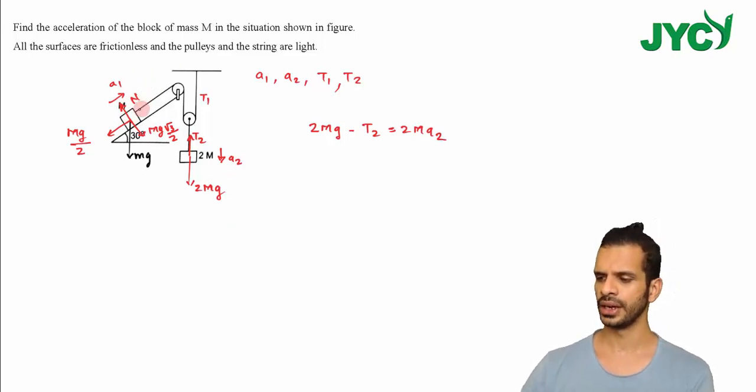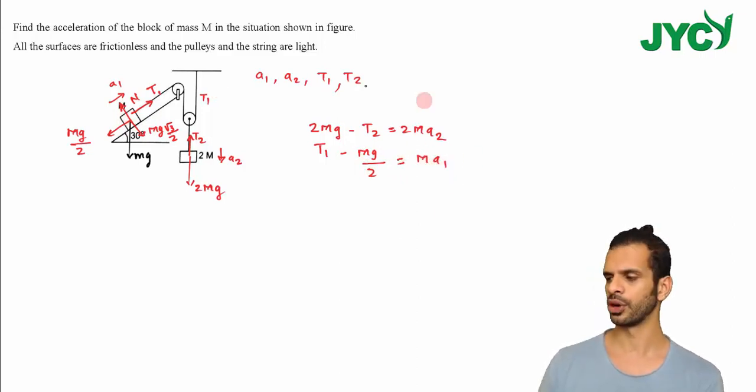There's another force which is tension T1 pulling this block upward. Acceleration is along this direction. So the equation is T1 minus MG by 2 equals MA1. This is equation number 2.